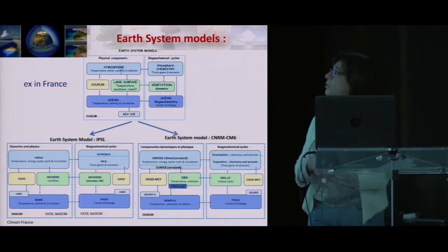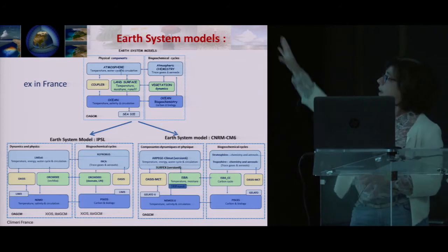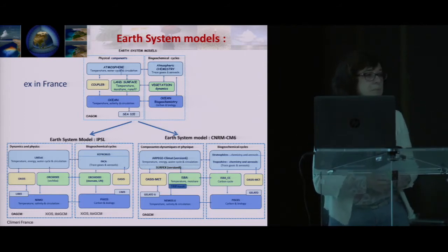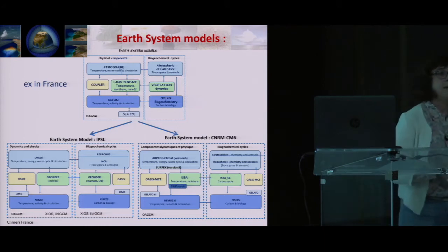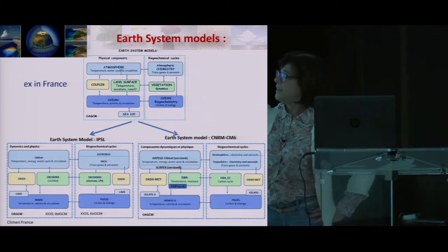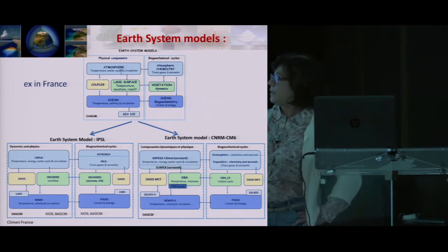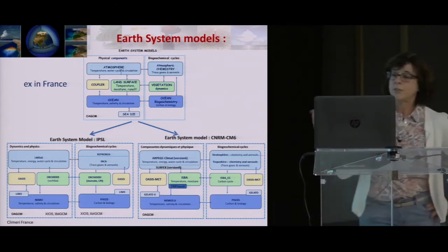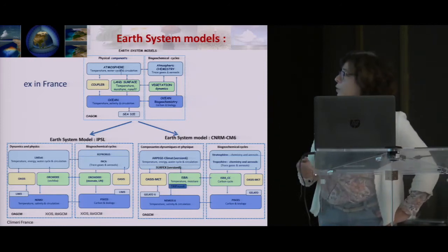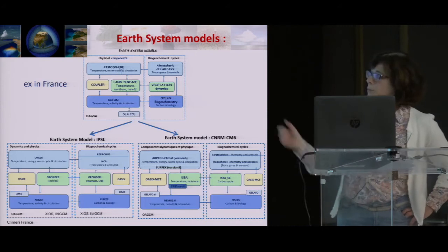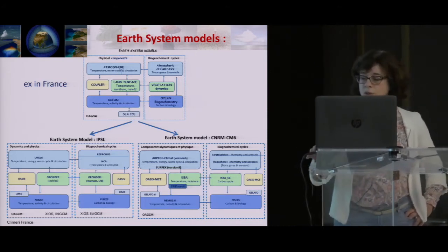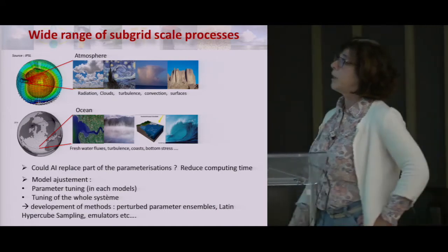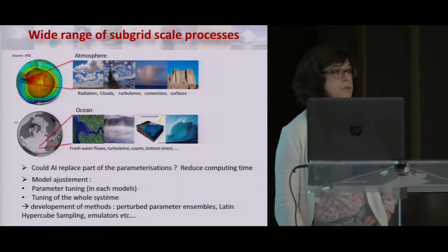You need atmosphere, ocean, land surface, sea ice, and the physical and biogeochemical components. Even though we all call our models Earth system models, the way they are built in terms of coupling, the diversity of physics in all the compartments, and the complexity in the representation of different cycles, is very different from one model to another. This is what makes the diversity in results, and we still think it's important to have this diversity because we don't know what the best solution is.